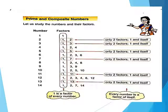Let's study the numbers first along with their factors. Number 1: the factor is 1. Number 2: the factors are 1 and 2. Number 3: the factors are 1 and 3. Number 4: the factors are 1, 2 and 4. Number 5: the factors are 1 and 5. Number 6: the factors are 1, 2, 3 and 6. Number 7: the factors are 1 and 7.